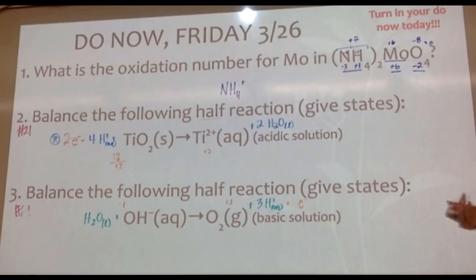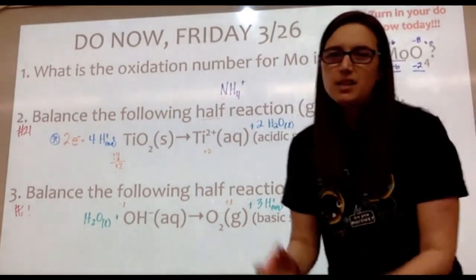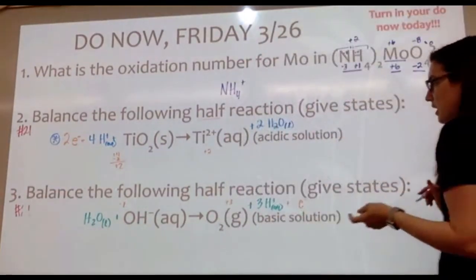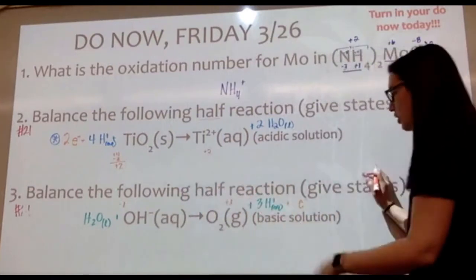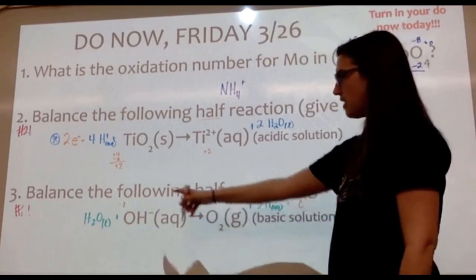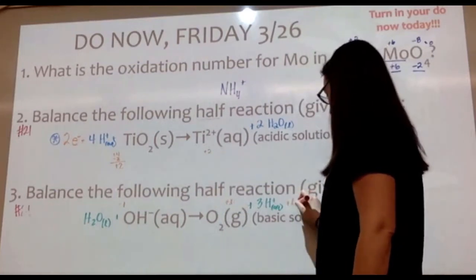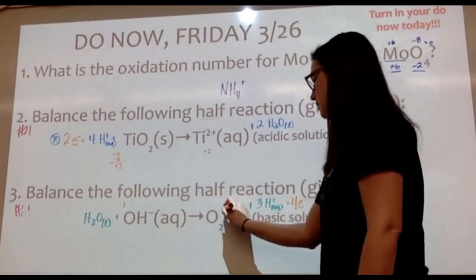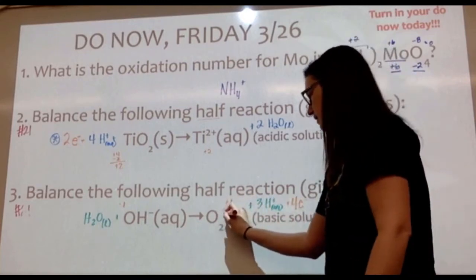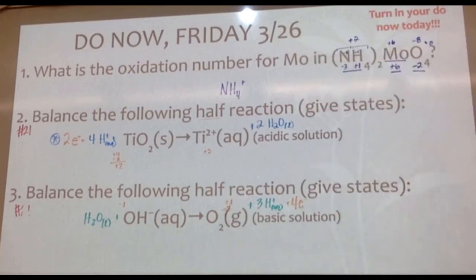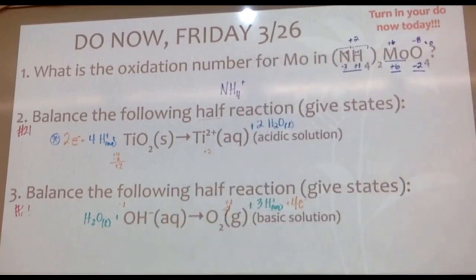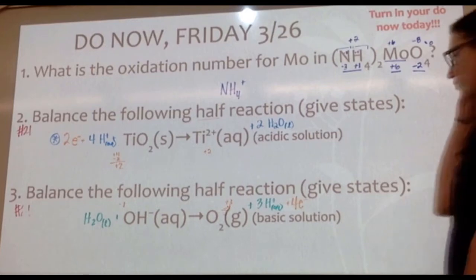Add electrons to the more positive side — the right side at plus three. Be careful with the math: three electrons would bring the right to zero, but we need it to equal minus one. So we need four electrons on the right: plus three minus four equals minus one, which matches the left. The balanced half reaction is now: H2O + OH− → O2 + 3H+ + 4e−.